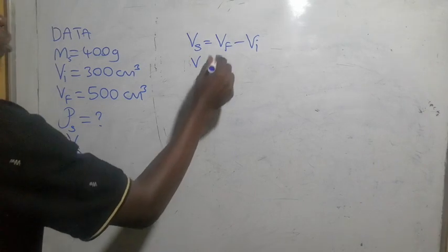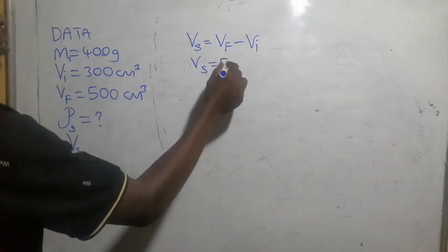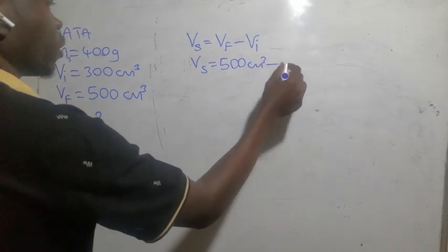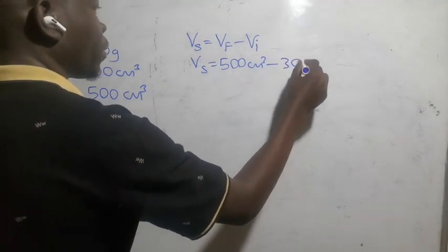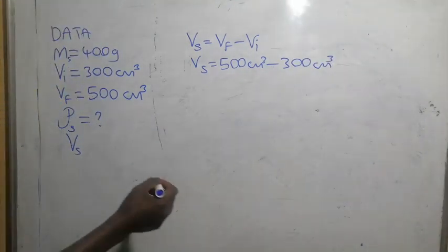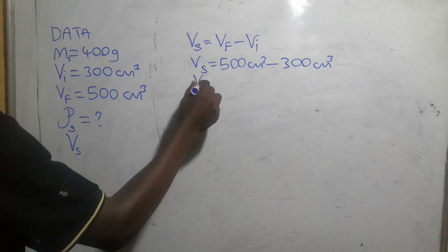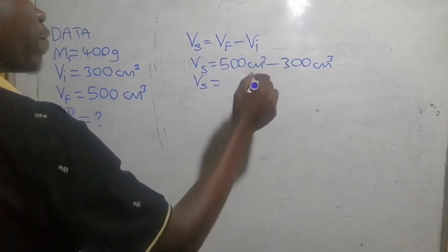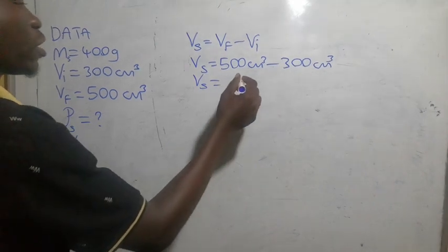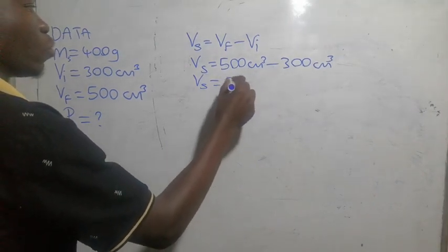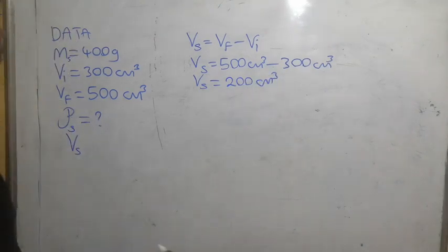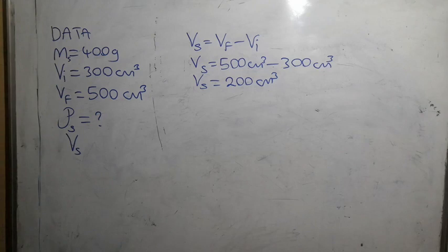V equals V-final, which is 500 cubic centimeters, minus V-initial, which is 300 cubic centimeters, which equals 200 cubic centimeters. So the volume of the stone is 200 cubic centimeters.